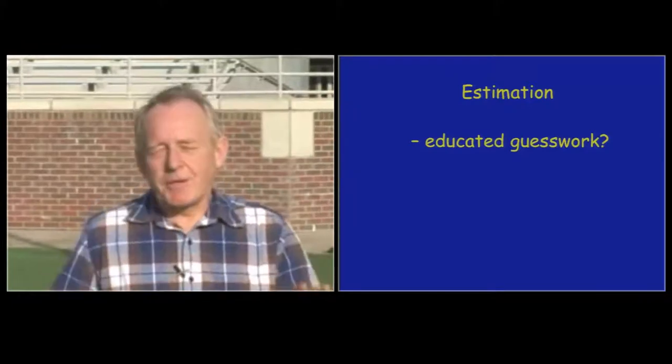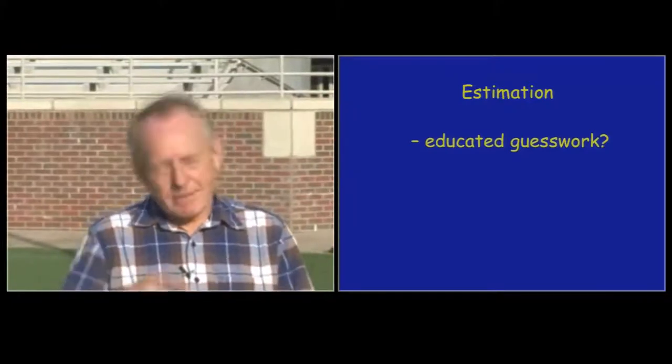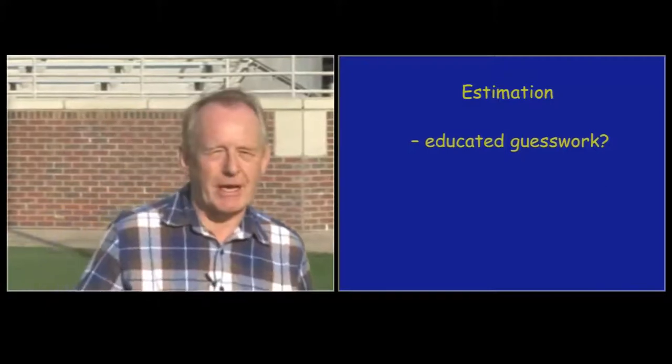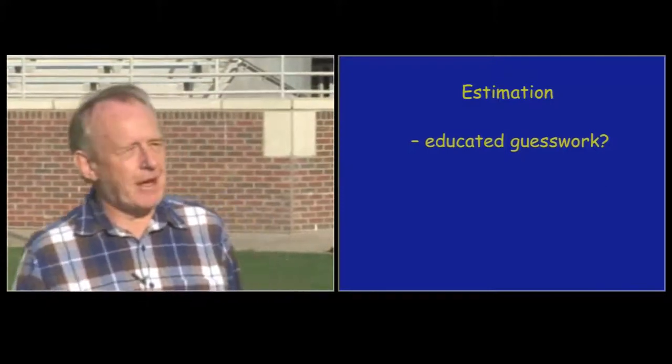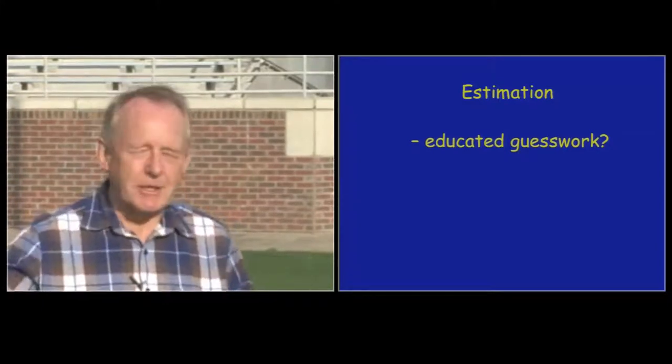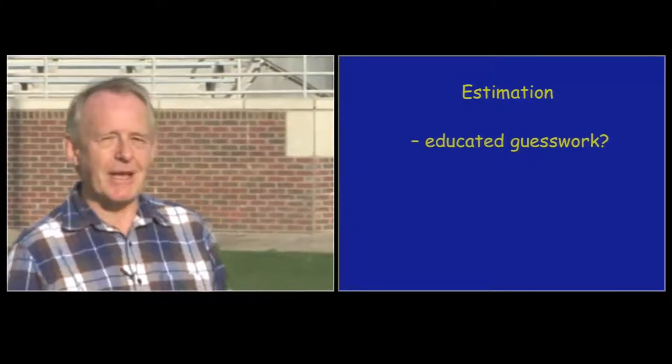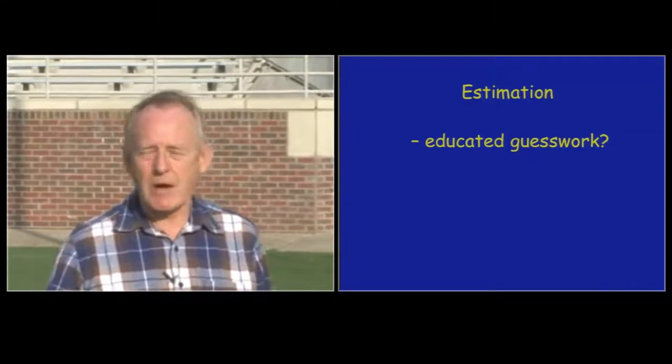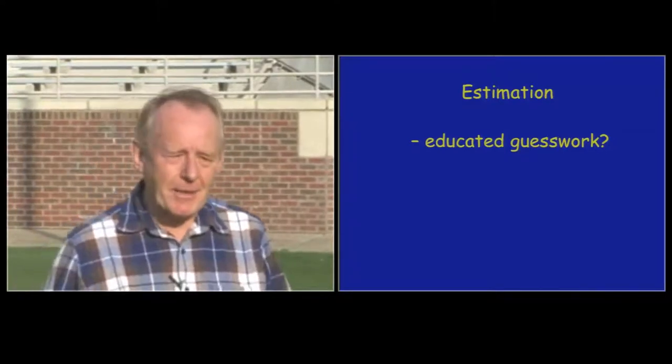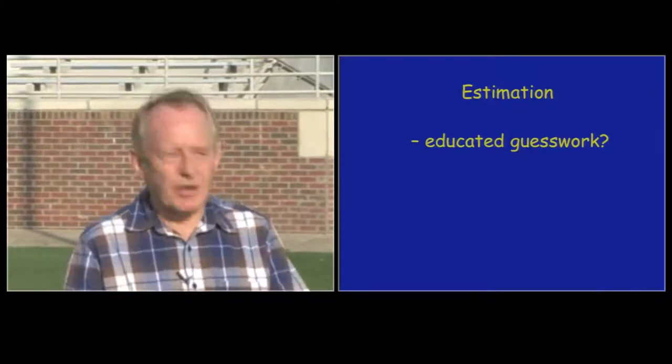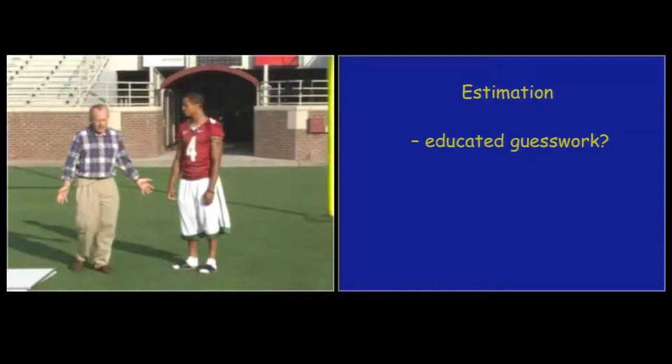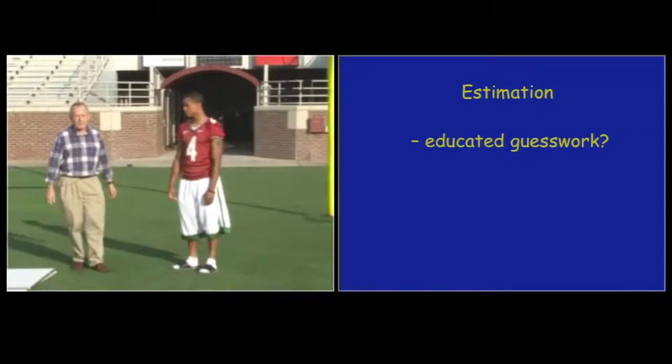Now, Tony has come onto this field lots of times, and he's looked around and seen all the seats filled when this place is pulsing before a game. There are about 85,000 seats in here. We can calculate that easily, but what he probably hasn't thought about is how many blades of grass he's running on whilst running around the stadium. It's really quite difficult, because it's very fine grass, and there are lots of small blades.